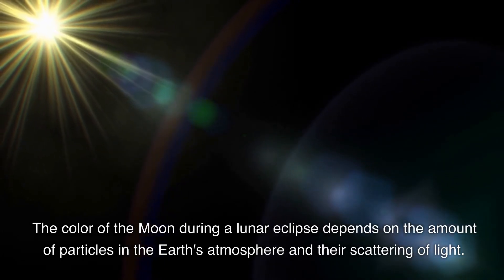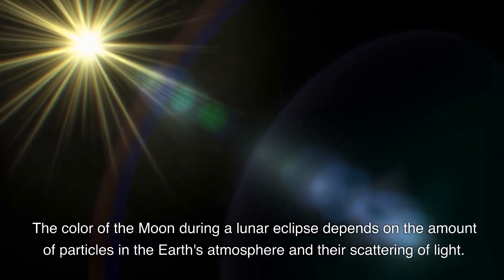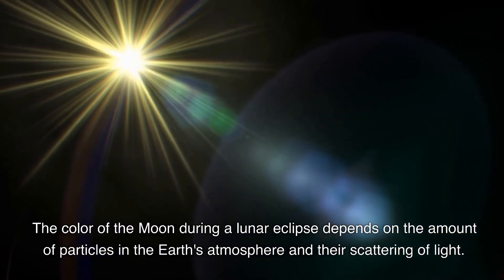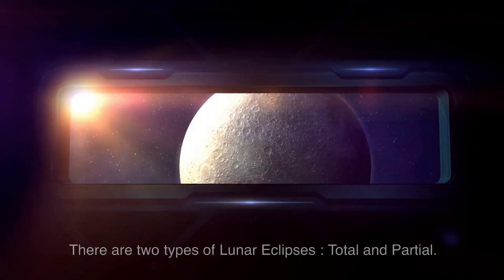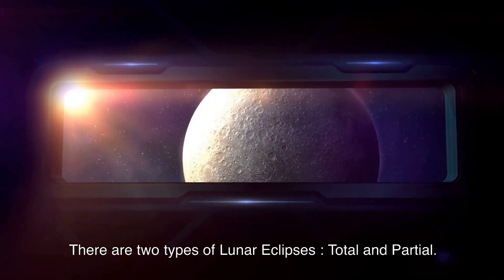The color of the moon during a lunar eclipse depends on the amount of particles in the earth's atmosphere and their scattering of light. There are two types of lunar eclipses, total and partial.